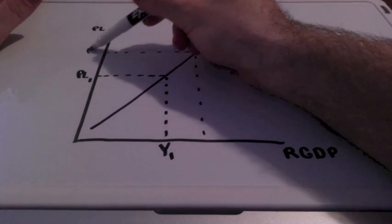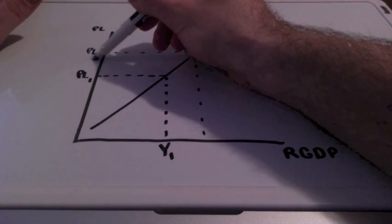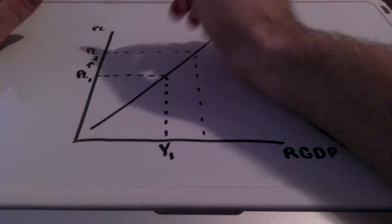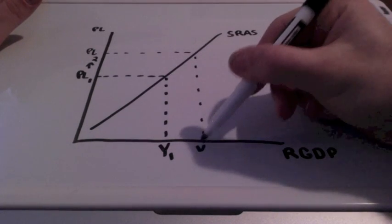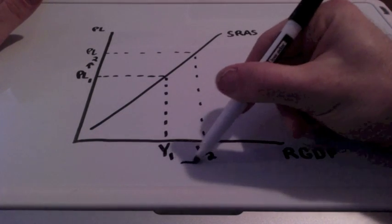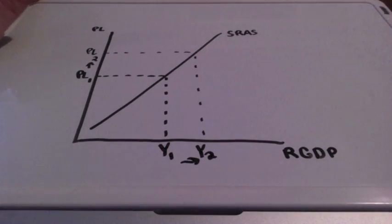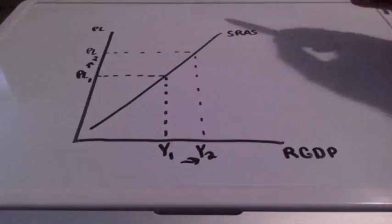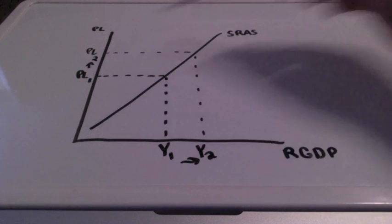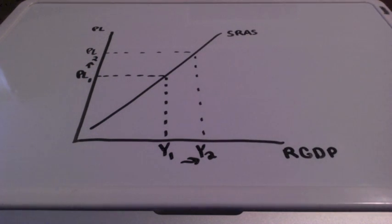We increase from PL1 to PL2 and Y1 to Y2, moving along the supply curve. This means that as our expenditures increase, so will our GDP.